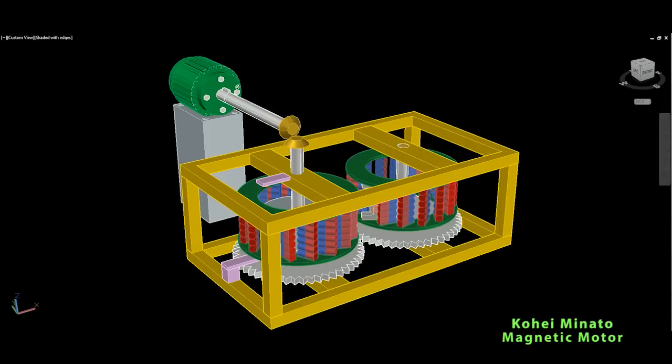This green is a standard electrical generator which will produce our free energy through this gear mechanism over here. And now let's get to the magnetic motor itself and see the configuration.